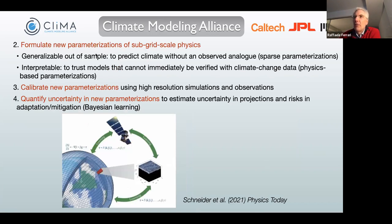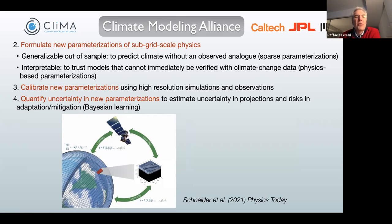We want to formulate our parameterization — a representation of the subgrid-scale physics that is important but cannot be resolved on the coarse grid of the climate model. We want this parameterization to be generalizable out of sample. What do we mean? We want a model that predicts future climate — something we haven't really observed, so we have no observed analogue.